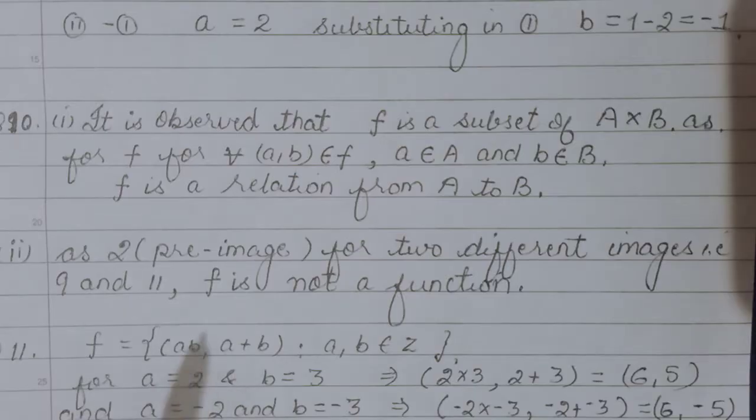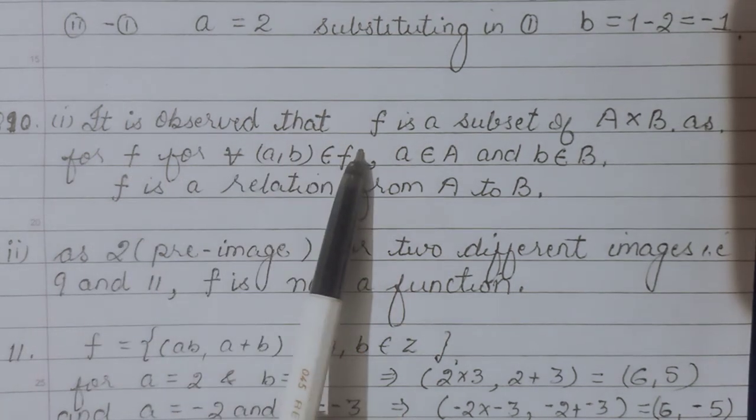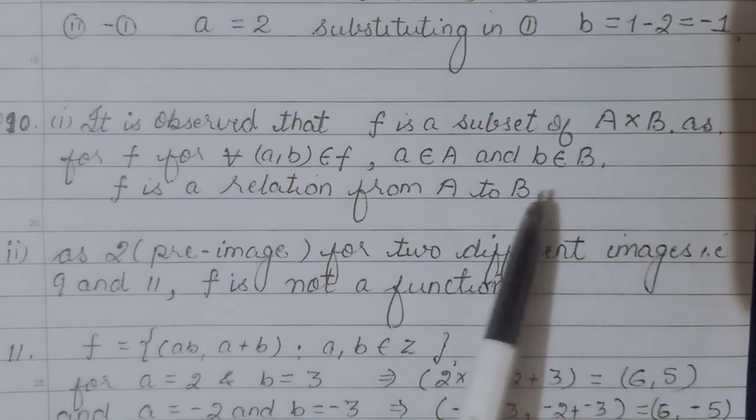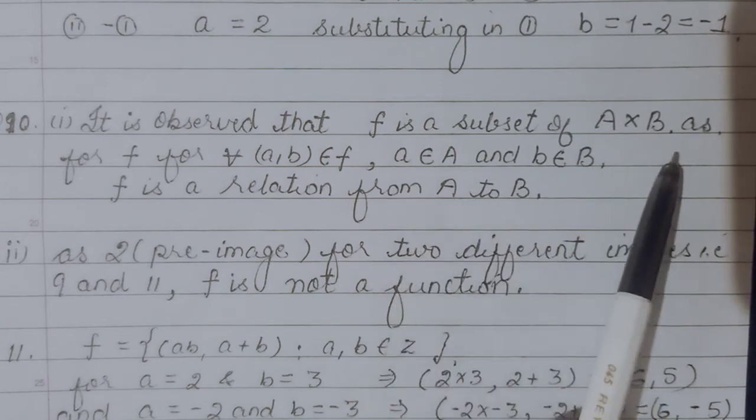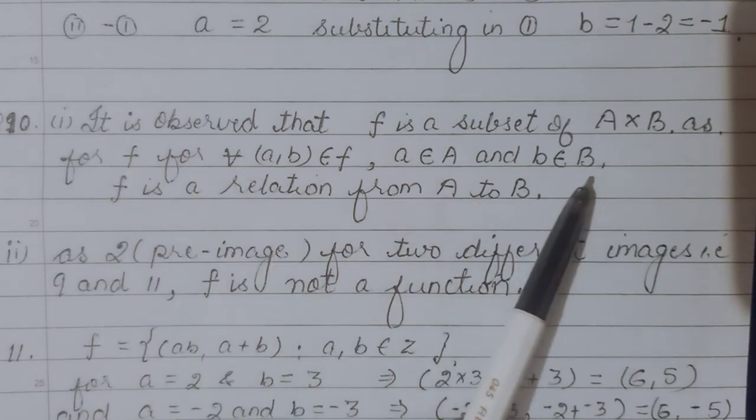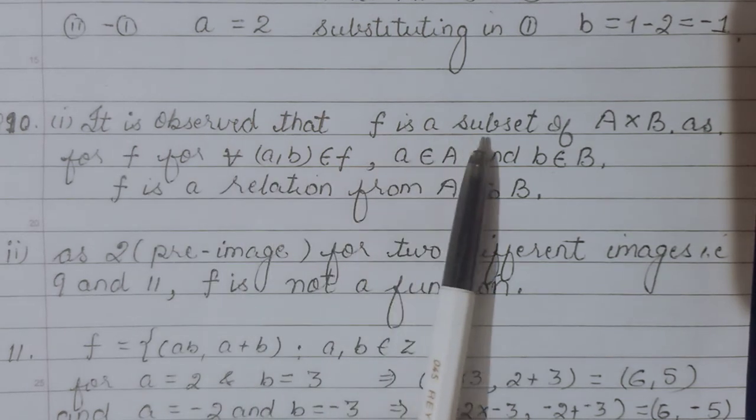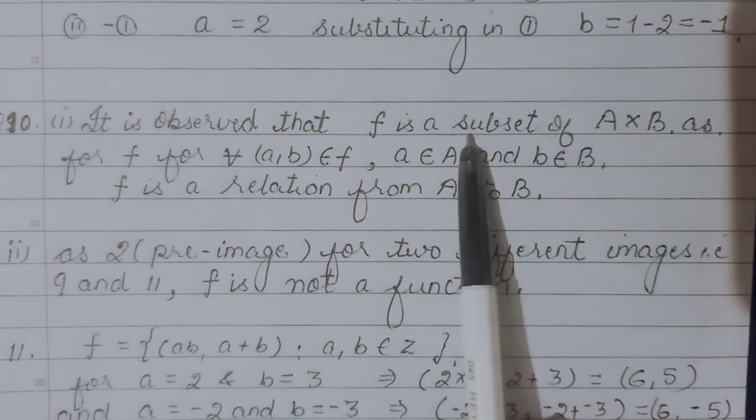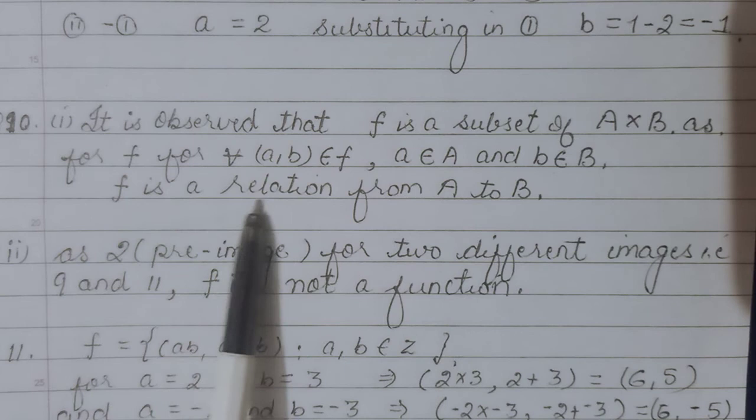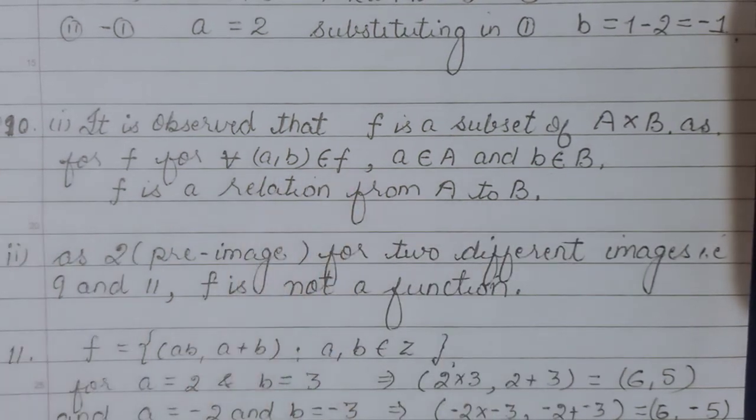For the first part, f is a relation from A to B. We can present our justification: f clearly is seen as a subset of A×B. Every subset of A×B is a relation, so hence we say that f is a relation from A to B.